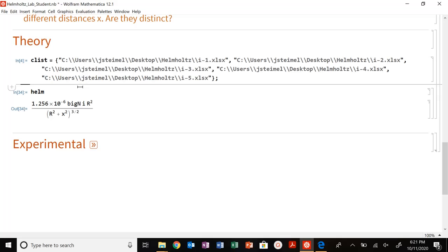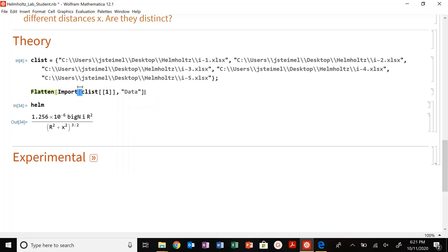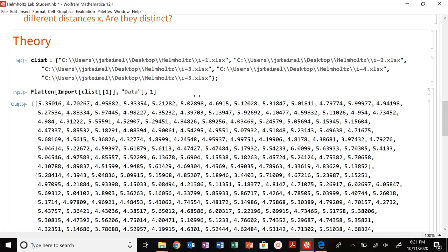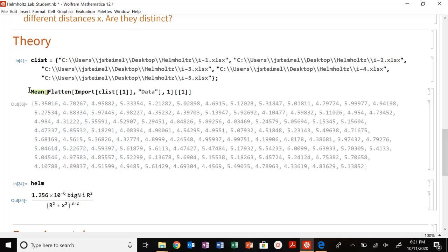Now, we do have some list of measurements for my current. So, I'm going to have to look at those current values. So, let's do the same thing. So, flatten, import, CList, one, data, comma, one. Let's pull out the first one. So, again, for that first distance, these are my values for my current. I can take the mean.